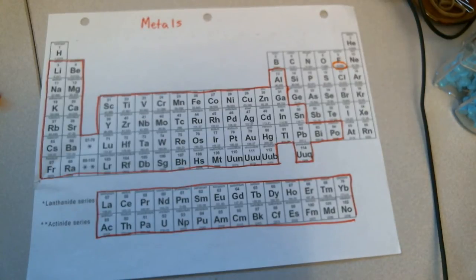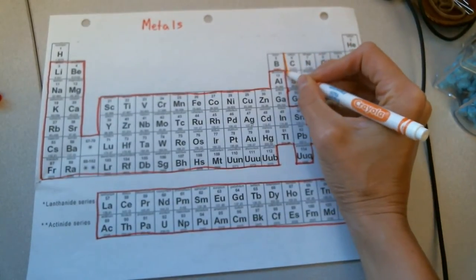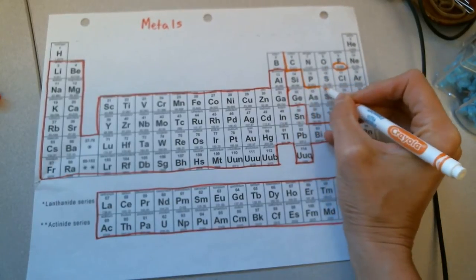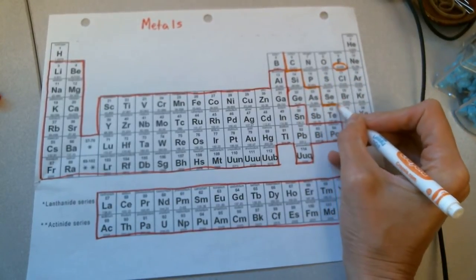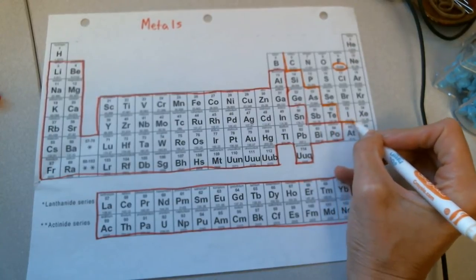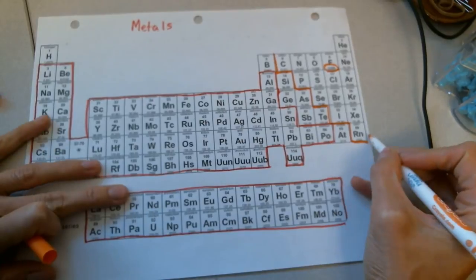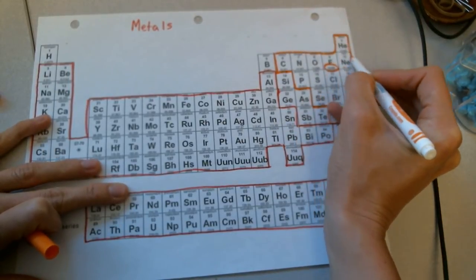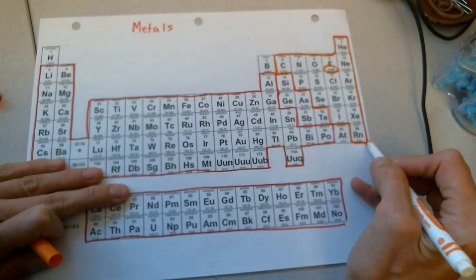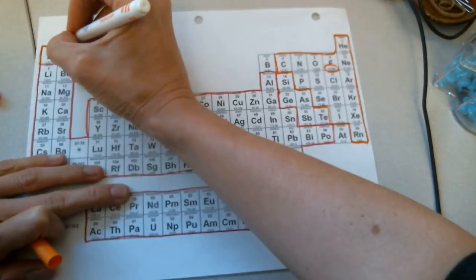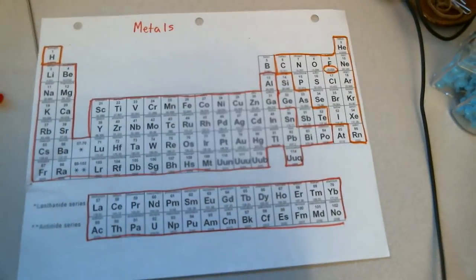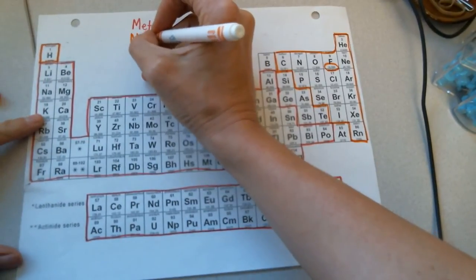Next, we're going to talk about non-metals. Most non-metals are found on the right-hand side of the periodic table. I'm going to mark these in a different color. I'm going to take my orange to mark them. We're going to go carbon, phosphorus, selenium, iodine, radon, and everything to the right of those. Then also, we're going to include hydrogen, which is in the upper left-hand corner of your periodic table. So those are our non-metals.